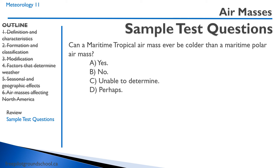Here's a tricky question: Can a maritime tropical air mass ever be colder than a maritime polar air mass? The correct answer is yes, it can be. There might be local variations that affect the absolute temperature of either air mass. However, if there were a front between a maritime tropical and a maritime polar air mass at the exact same time, it would be highly unlikely that the maritime tropical air mass would be colder, because it originates from the Caribbean, and the Caribbean is unlikely to be colder than maritime polar regions like Newfoundland.